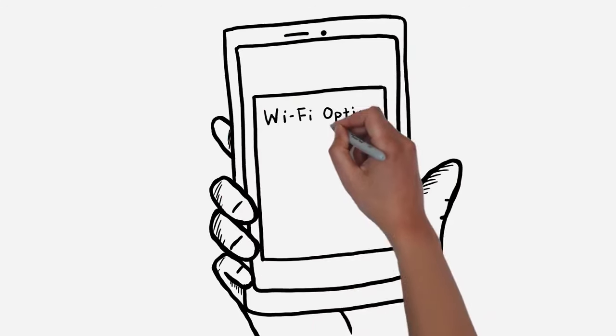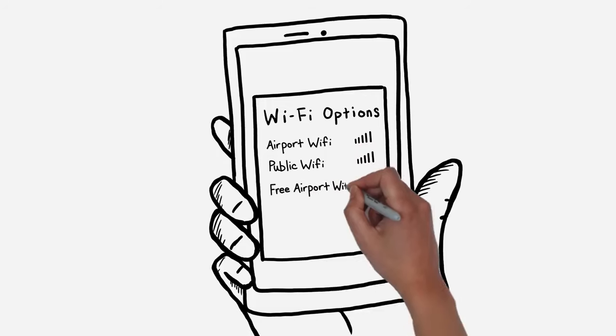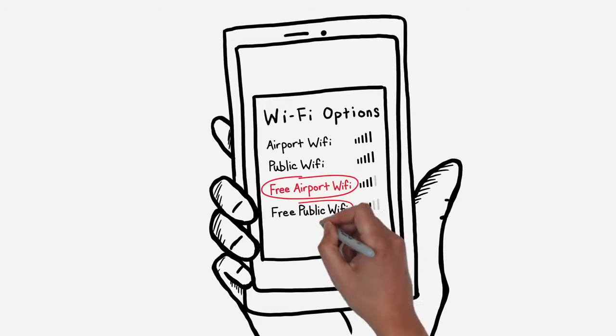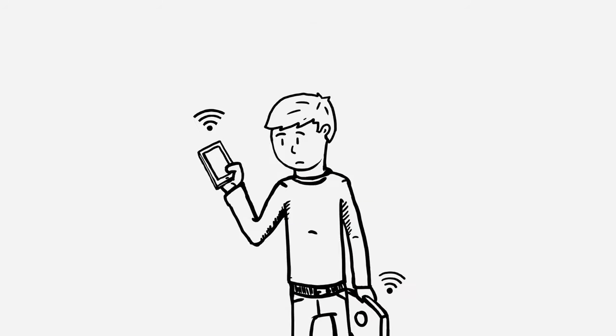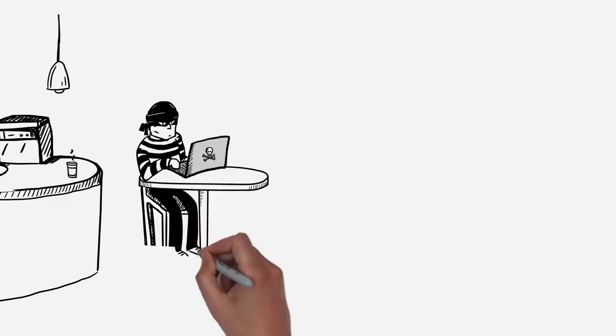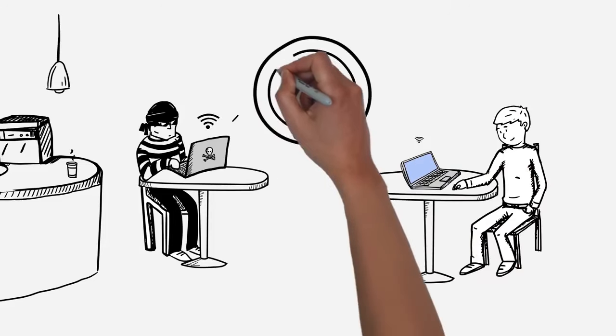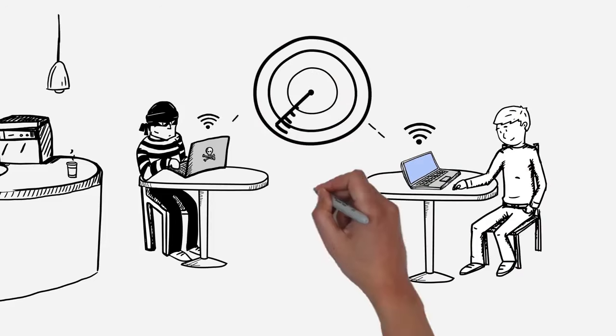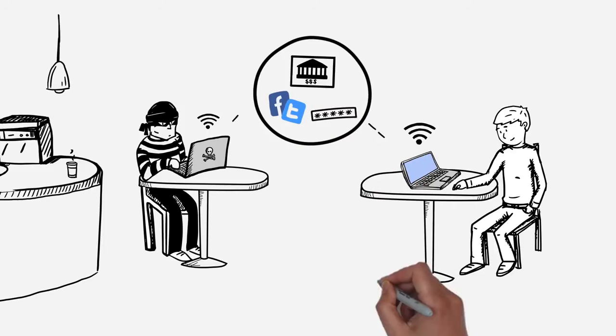A common danger is fake public Wi-Fi networks. These have similar sounding names to legitimate public Wi-Fi networks and are meant to trick and confuse you. Once you connect to this fake Wi-Fi network, everything you do online is monitored by cybercriminals, who scan your activity for banking and social media login information.